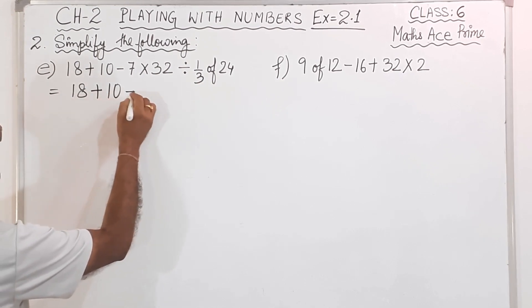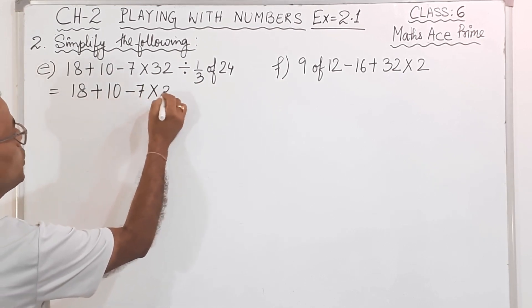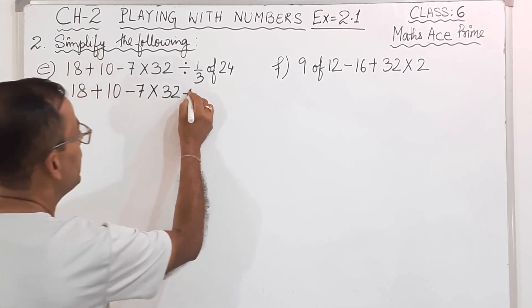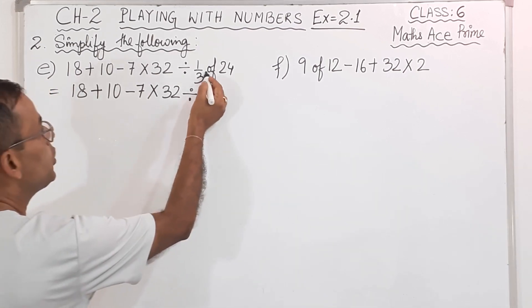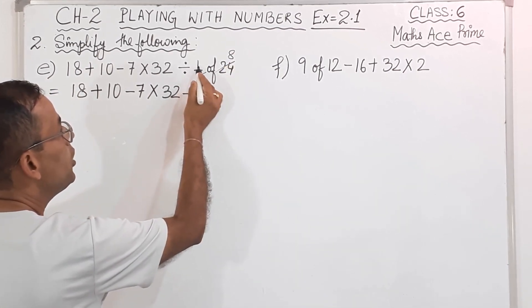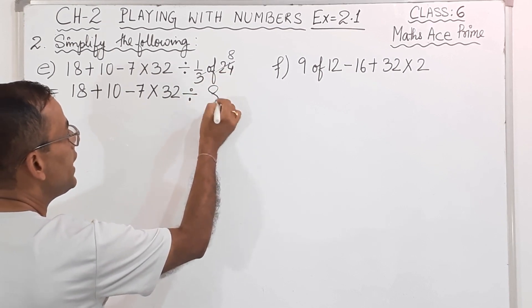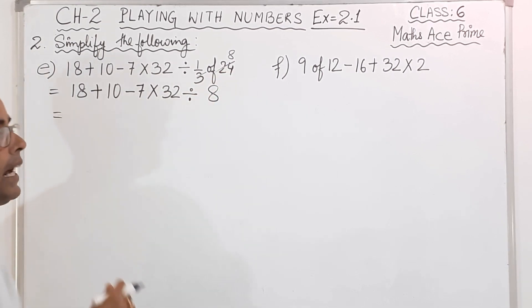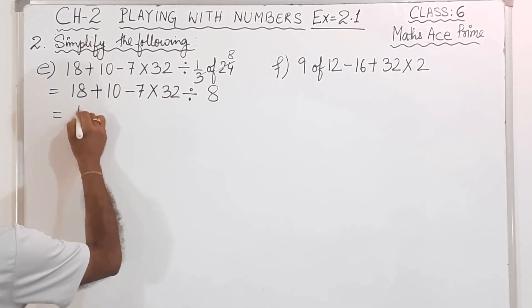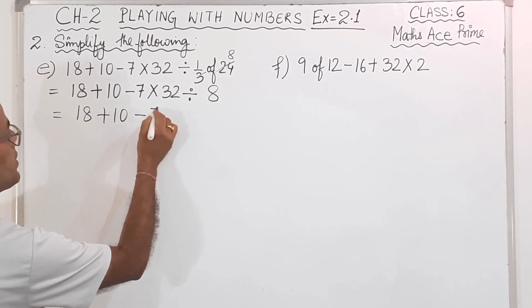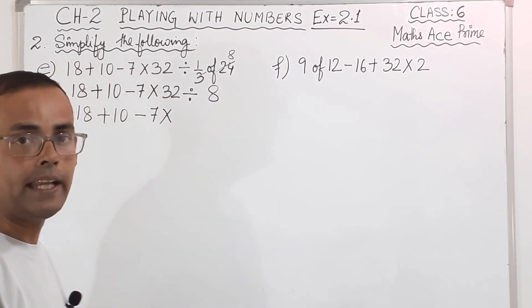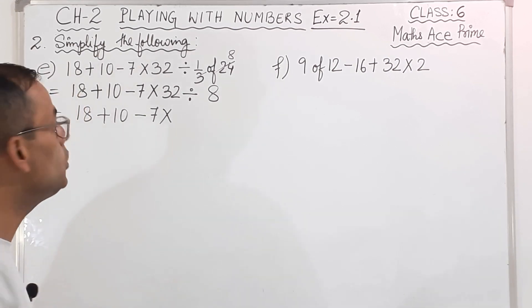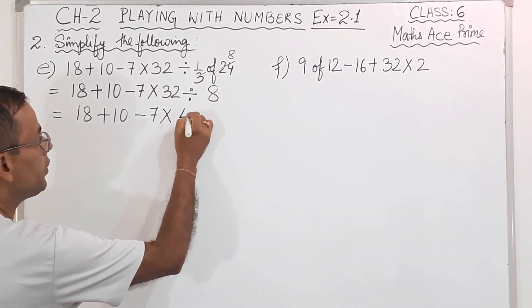So what I will write: 18 plus 10 minus 7 into 32 divided by — now this 1 we can cut, 'of' means 'into' I told you — so 3 ones are and 3 eights are 24. So 1 into 8 is 8 only. Now 'off' done, now D for division — so this is division. We will do 18 plus 10 minus 7 into, now 32 divided by 8. So 32 divided by 8 — 8 fours are 32 — so 4.